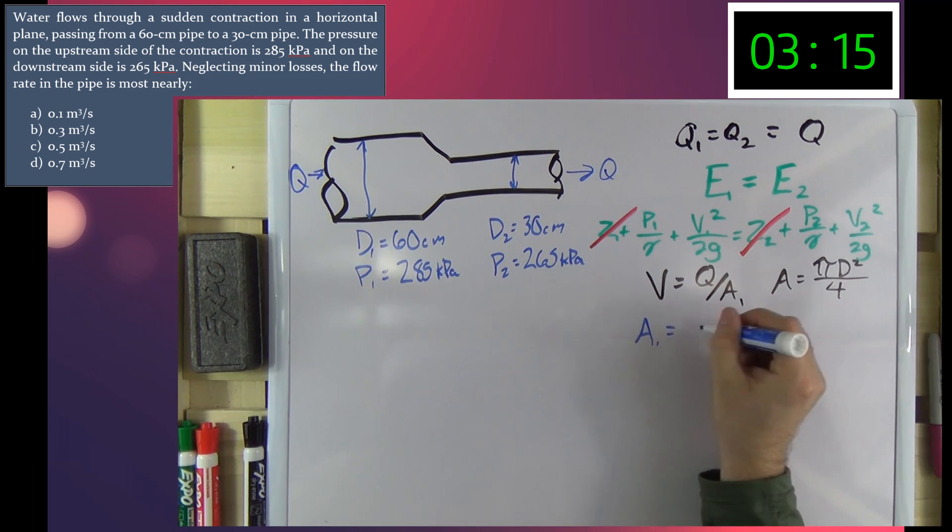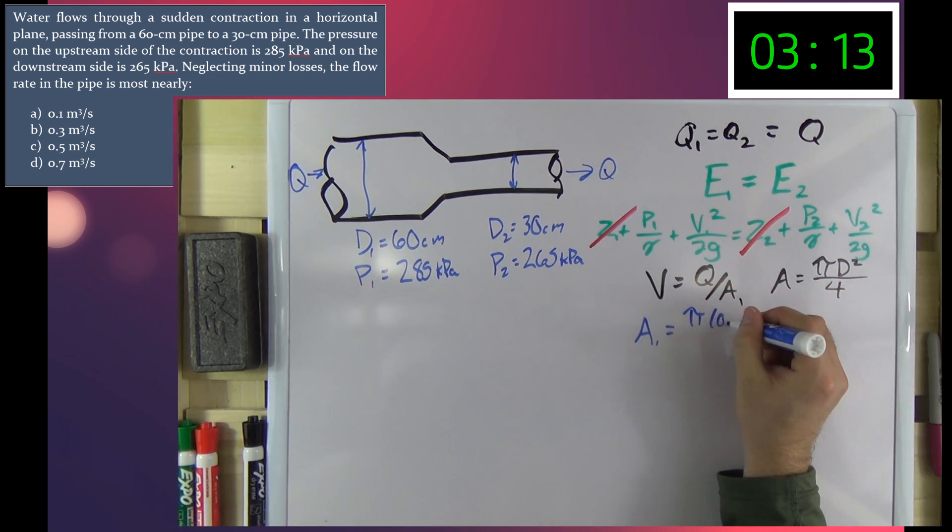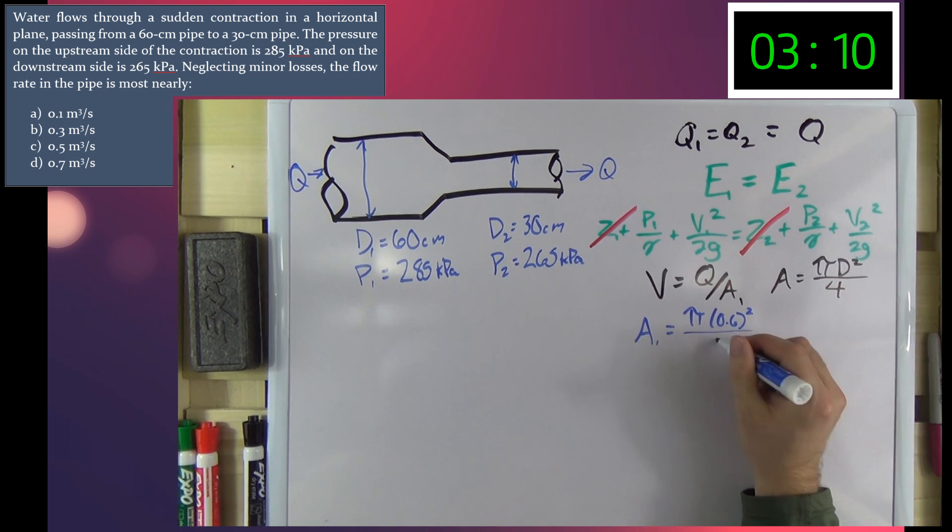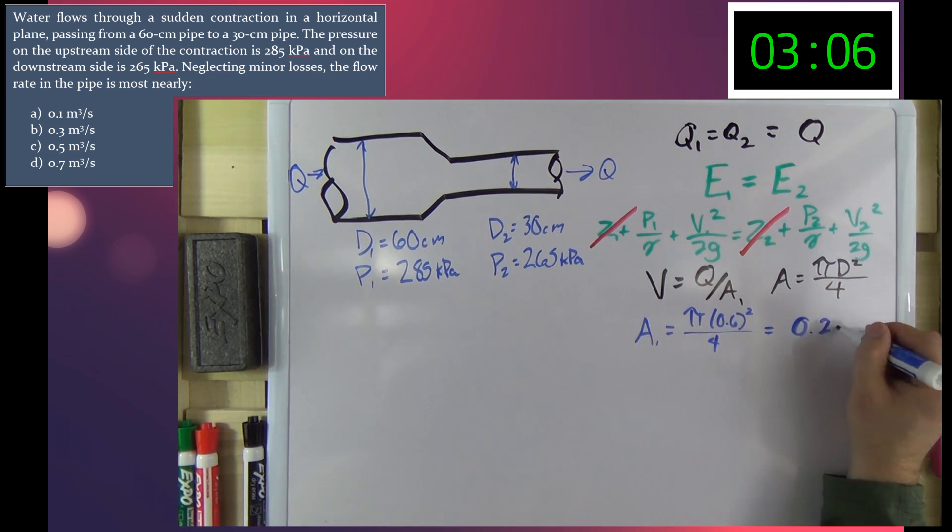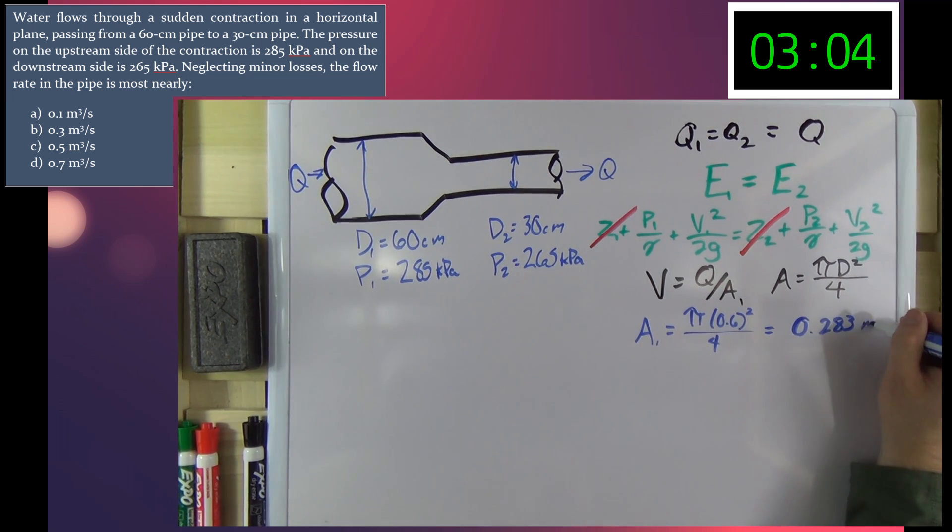Area 1 is equal to pi times 0.6 meters squared over 4 which is equal to 0.283 square meters.